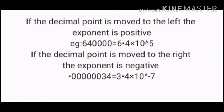If the decimal point is moved to the right, the exponent is negative. For example, 0.00000034 is equal to 3.4 × 10^-7. The decimal moved to the right, so the exponent is negative.